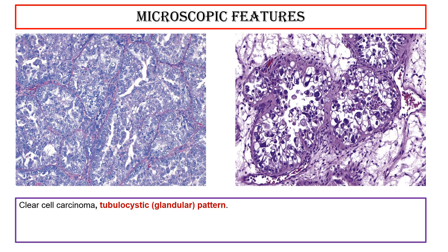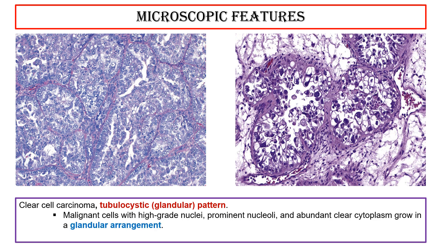Clear cell carcinoma — tubulocystic/glandular pattern: malignant cells with high-grade nuclei, prominent nucleoli, and abundant clear cytoplasm grow in a glandular arrangement. This morphology may overlap with endometrioid carcinomas with clear cell features.